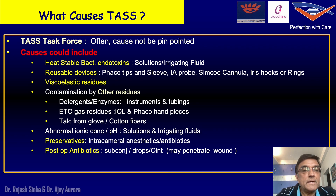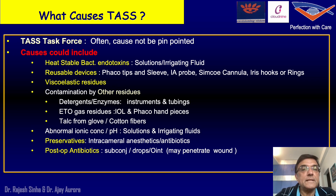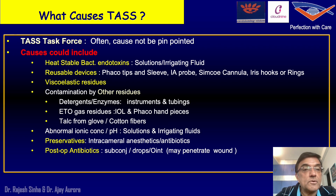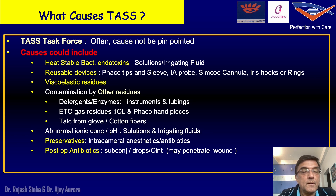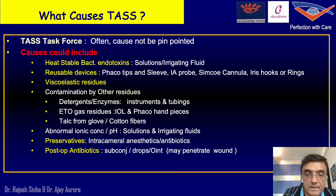TAS could be caused by heat-stable bacterial endotoxins from reusable devices — phaco tips, sleeve, eye probes, Simco cannula, iris hooks, or various rings. It can also occur because of viscoelastic residues when cannulas are not cleaned well, or contamination from detergents, radio gases, talc from gloves, or cotton fibers. There can be abnormal ionic concentrations in solutions if you have changed the source of irrigating fluid. It can also be caused by preservatives or post-operative antibiotics going into the eye.